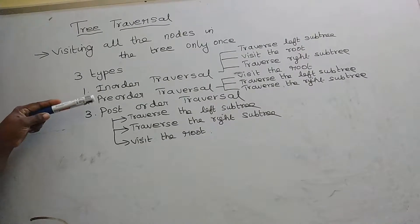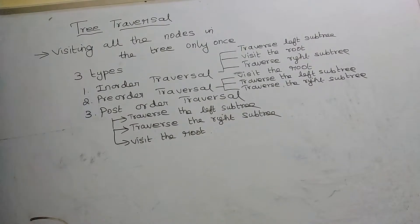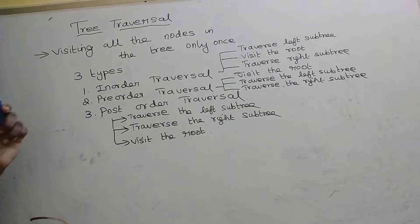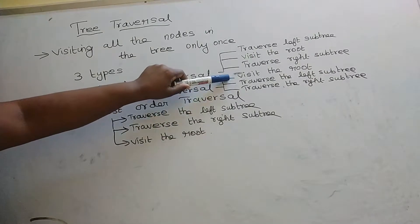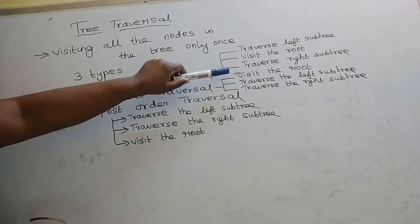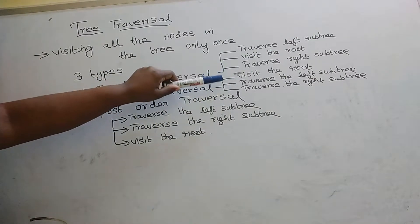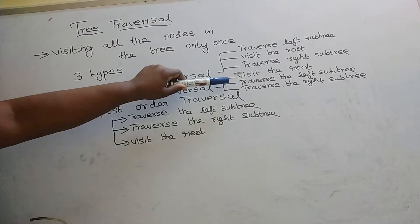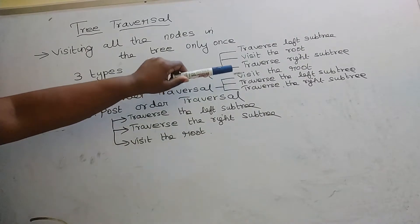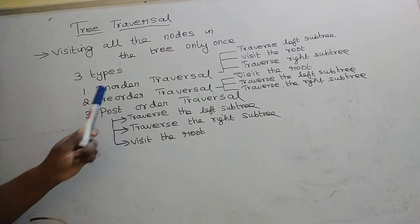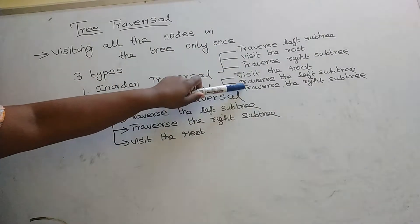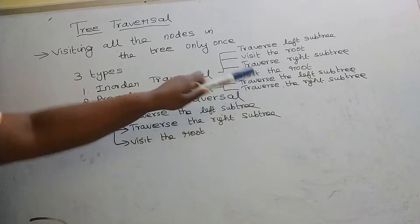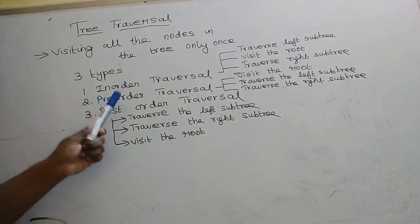The second type of traversal is preorder traversal. In preorder traversal, first we have to visit the root, then we have to traverse the left subtree in preorder, then we have to traverse the right subtree in preorder.